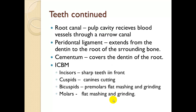The pulp cavity receives blood vessels through a narrow canal called the root canal. The periodontal ligament extends from the dentin to the surrounding bone. Cementum covers the dentin of the root. As for tooth types, we use the acronym ICBMs: Incisors — sharp, in the front; Cuspids — canine teeth for cutting, off to the side of the incisors; Bicuspids or premolars — flat for mashing and grinding; and Molars — flat for mashing and grinding.